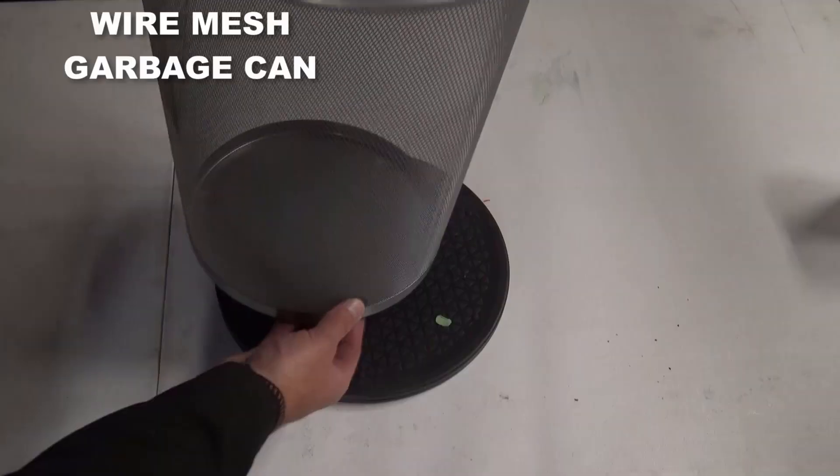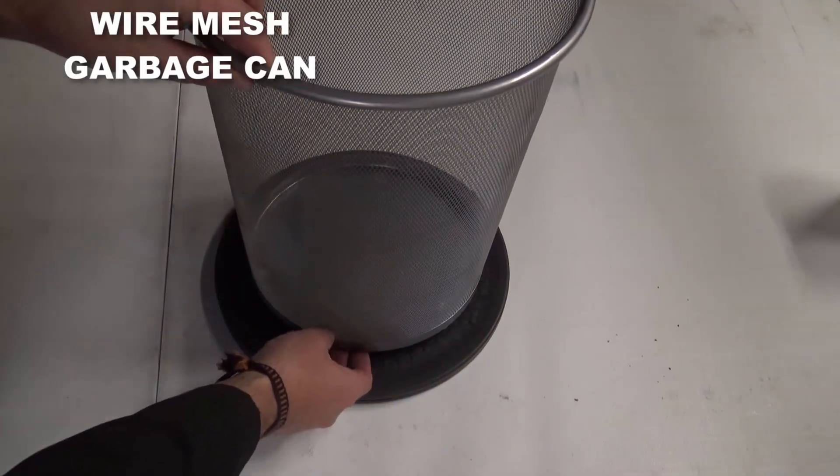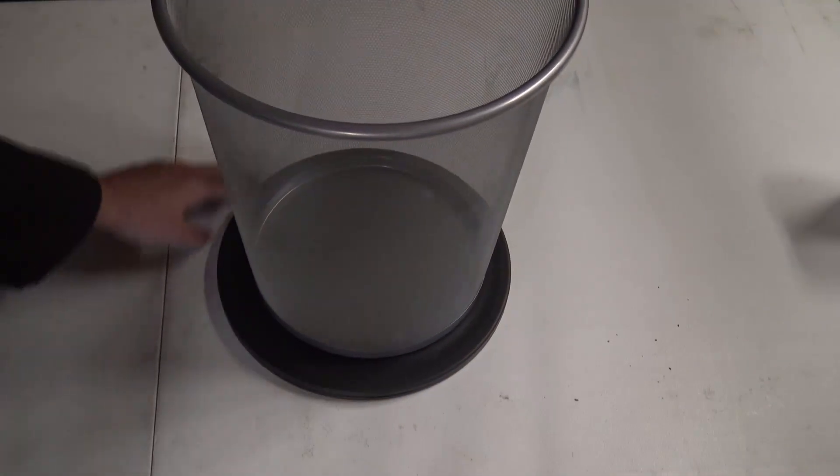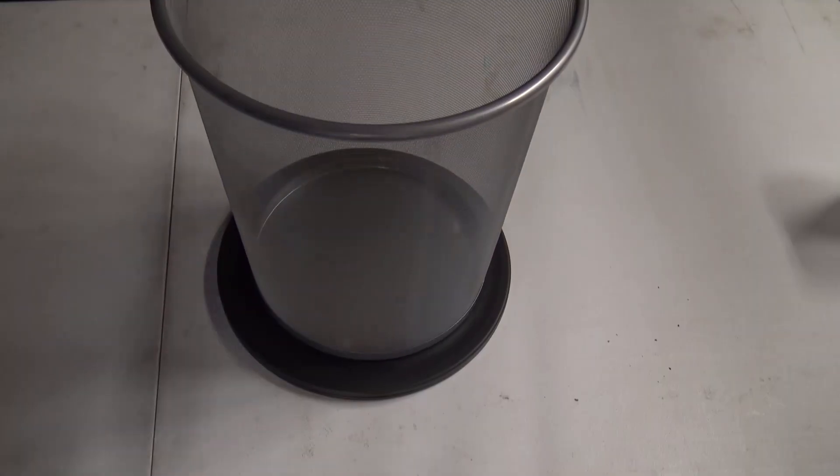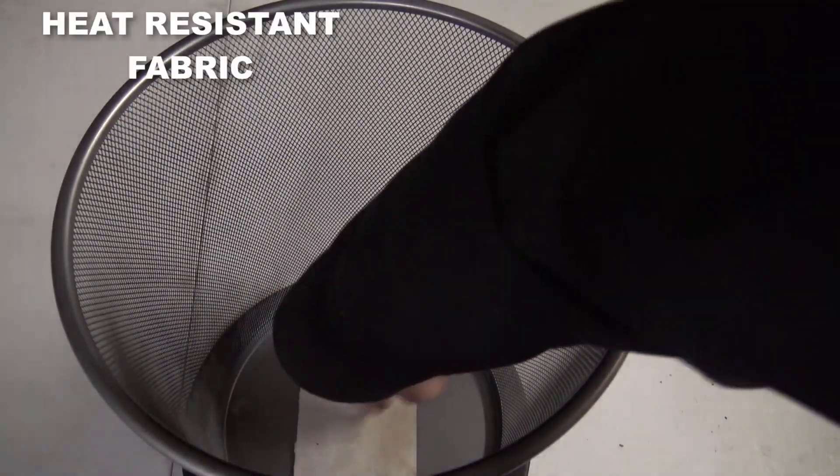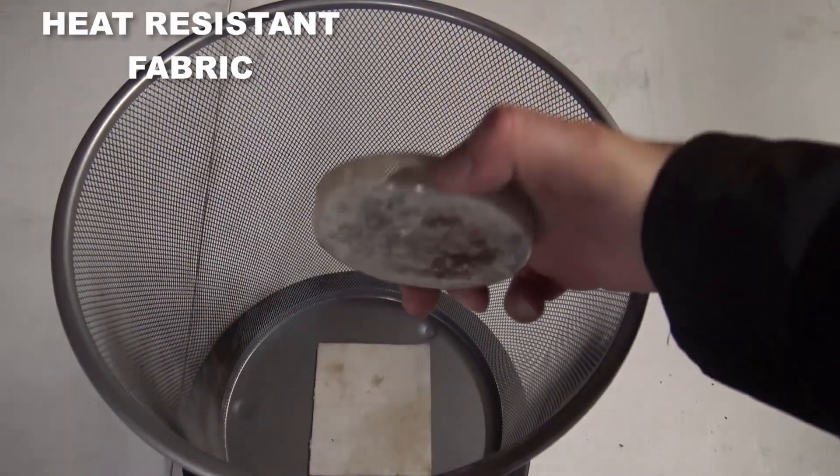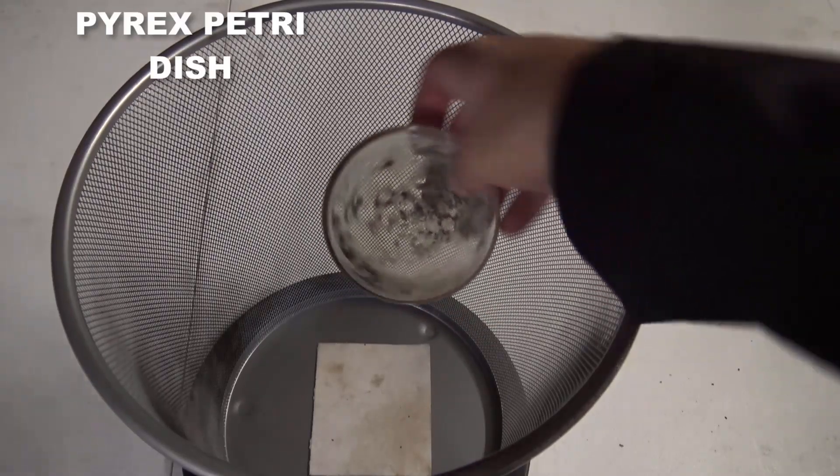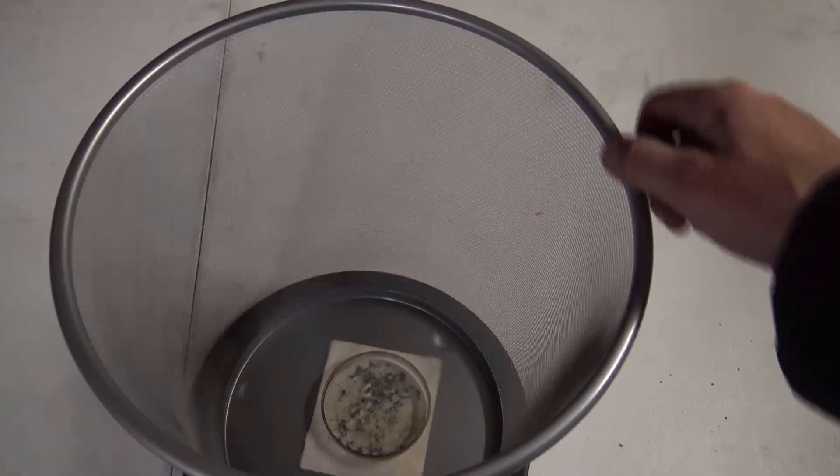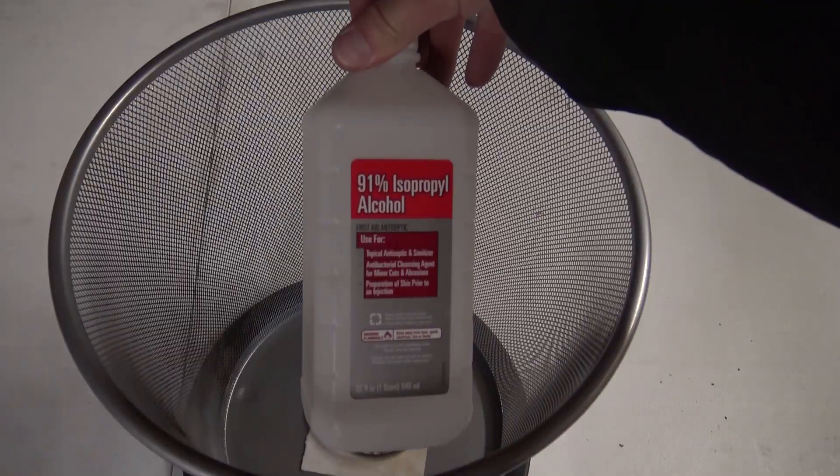Then you're going to need a wire mesh garbage can or some wire screen, but the garbage can is great because it's nice and sturdy already. Then I like to put some heat resistant fabric down in the bottom because this is going to get hot, and then of course you need some sort of glass that's going to resist the heat. I'm using Pyrex.